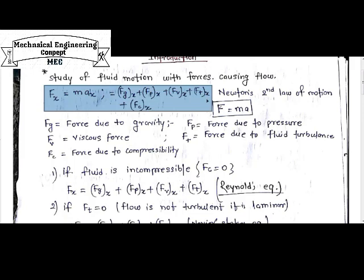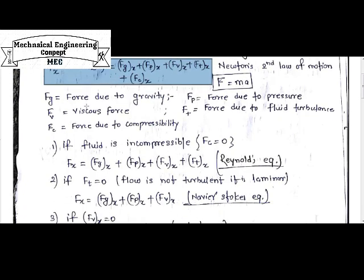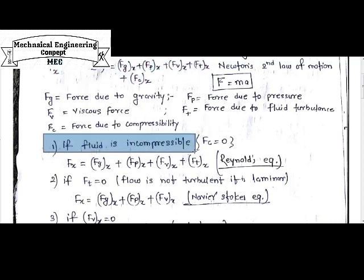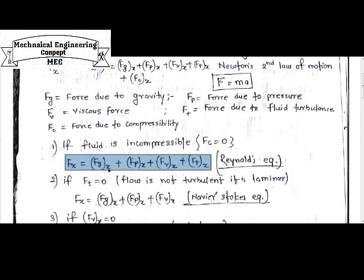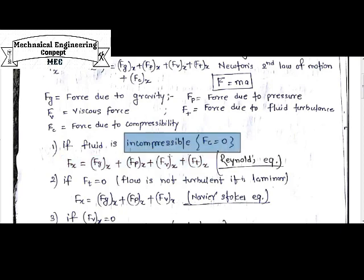Taking this equation further, considering the first condition: if the fluid is incompressible, then the compressibility force Fc becomes zero. The resultant equation will be Fx = Fgx + Fpx + Fvx + Ftx — gravitational, pressure, viscous, and turbulence force components in the x-axis. This equation is known as Reynolds's equation.